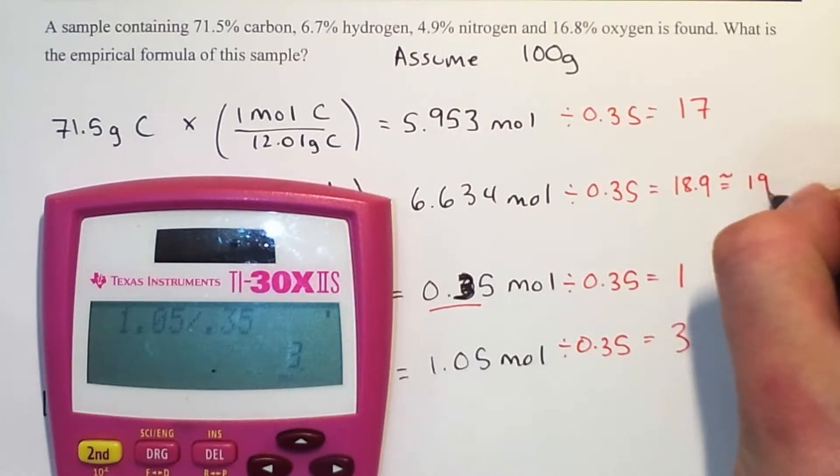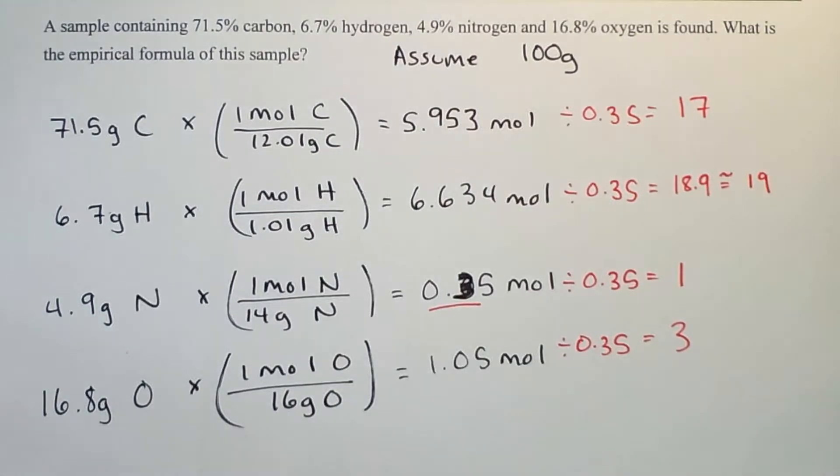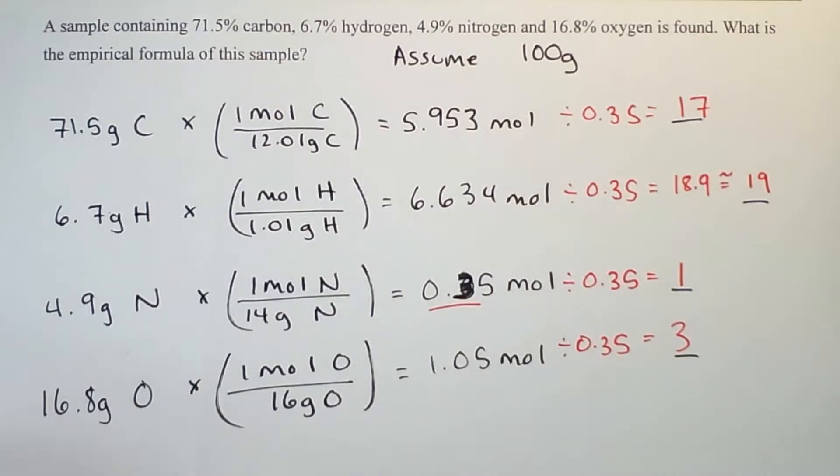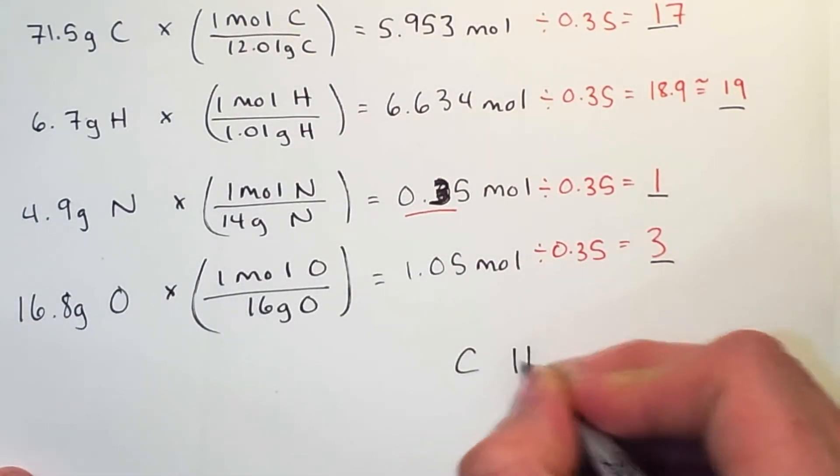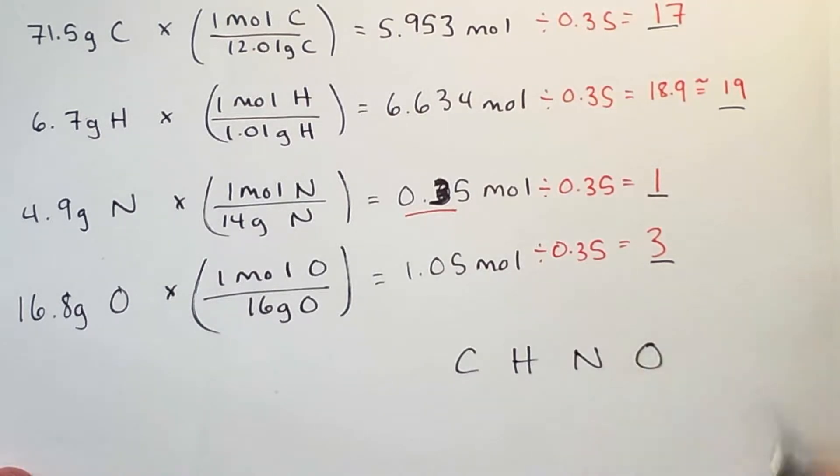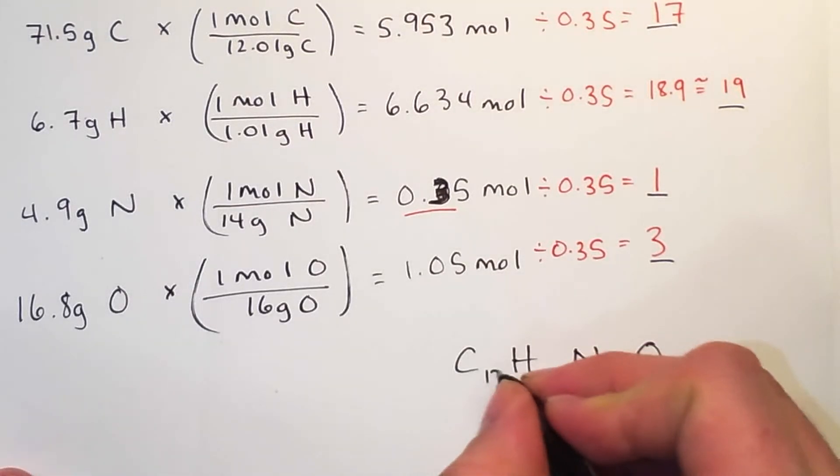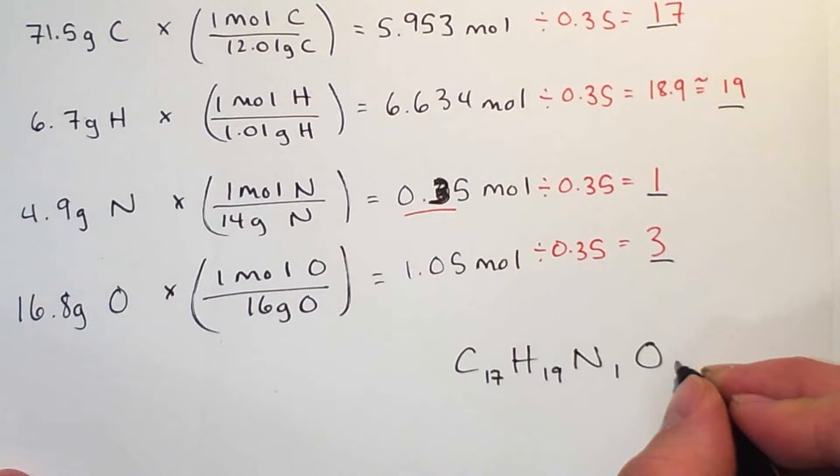We'll say that's approximately equal to 19. We're not going to have to worry about multiplying by any coefficient. So we have our four compounds. They are C, H, N, O. Carbon usually goes first, hydrogen usually goes second. There is an order that's expected, but it really doesn't matter when you're doing these. 17, 19, 1, and 3.